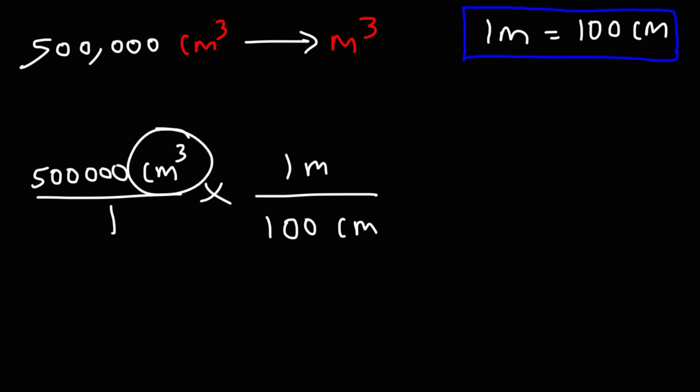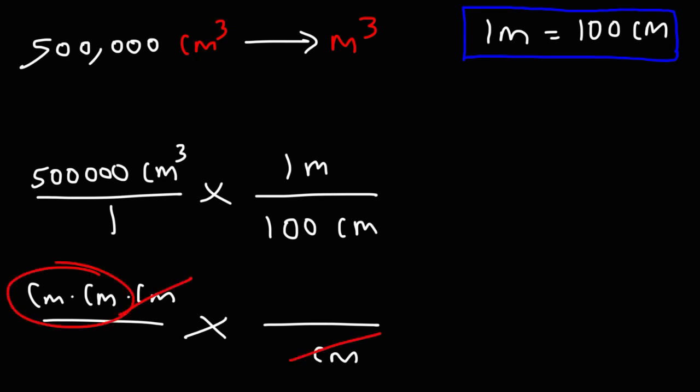Now, you might be wondering, what does it mean when we have centimeters cubed? How is that different from centimeters? Centimeters cubed means that we have three units of centimeters being multiplied to each other. Right now, only one will cancel, and we'll still have two more. In order to cancel all three of the centimeter units on the top left, we need to raise this conversion factor to the third power.